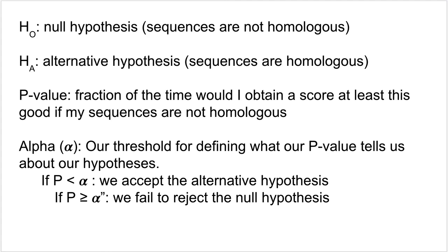If we frame this in statistical terms, our null hypothesis when doing a sequence alignment is that the sequences we're comparing are not homologous with one another. The alternative hypothesis is that the sequences are homologous. The p-value is then the fraction of times you would obtain a score at least as good if the sequences are not homologous — essentially telling you how often you would be incorrect if you chose to accept the alternative hypothesis given a certain alignment score.